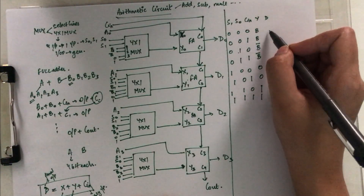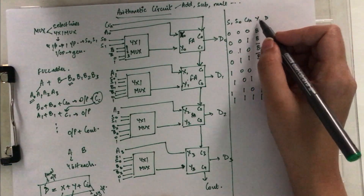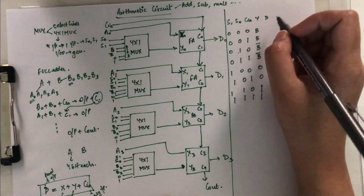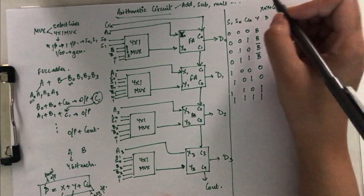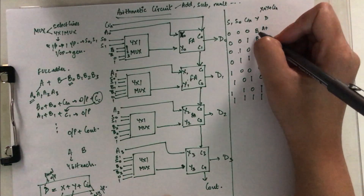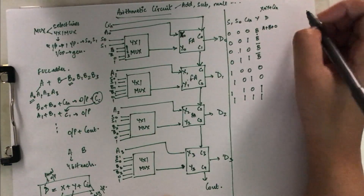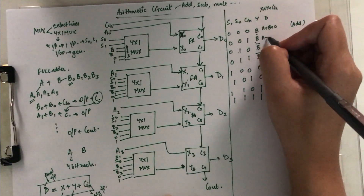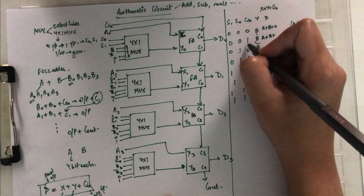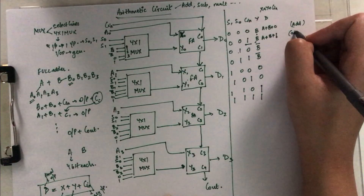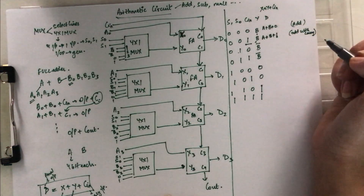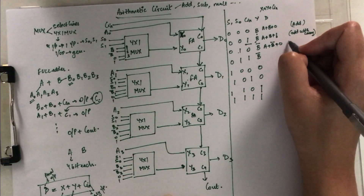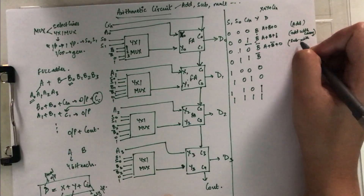On the basis of these values we compute the value of output D by putting them into the equation D = X + Y + C-in. For the first case, X is always A, Y is B, and C-in is 0, so the operation results in A + B, which is normal addition. The next case is A + B + 1 because the carry value is 1, hence it is addition with carry.